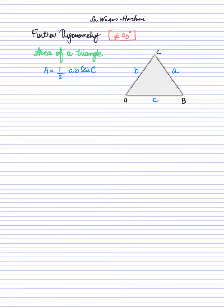There is a condition to find the area of a triangle. The condition says that whatever two sides you are going to pick, the angle must lie between these two sides in order to find the area of a triangle.